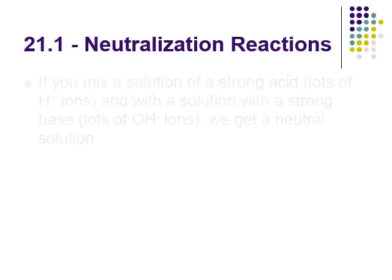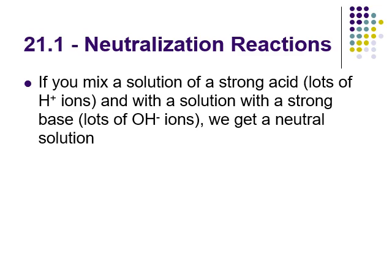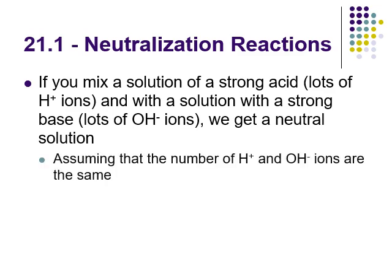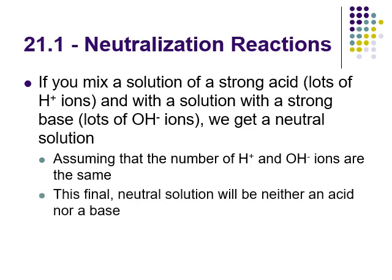One of the things we saw last chapter was that if we mix acids and bases together, we get water and a salt. If you mix a strong acid, which has lots of hydrogen ions, with a strong base, which has lots of hydroxide ions, we end up with a neutral solution because the hydrogen and hydroxide react to form water. This assumes equal numbers of hydrogen and hydroxide ions. If you have more hydrogen ions, you get an acidic solution; more hydroxide ions, a basic solution. That final neutral solution will be neither an acid nor a base.